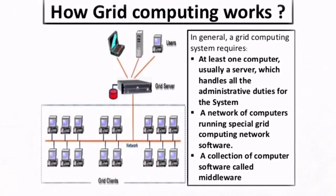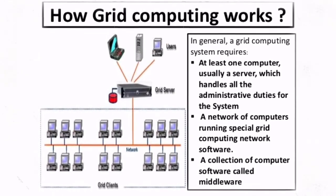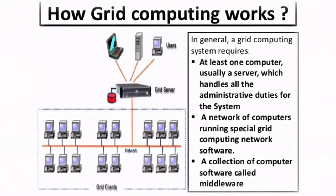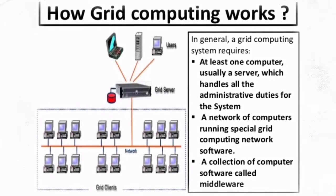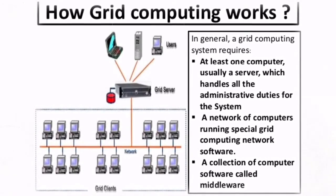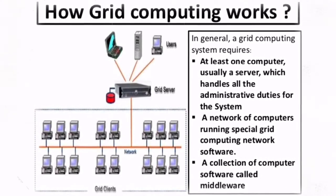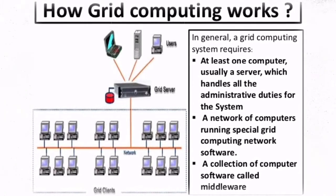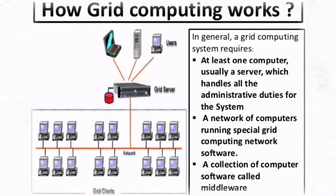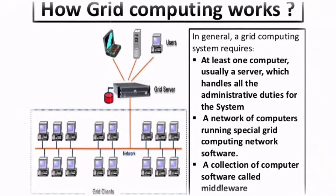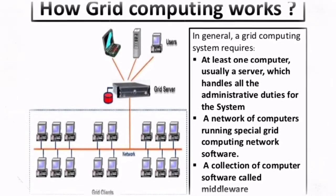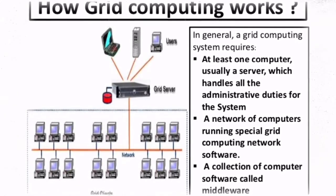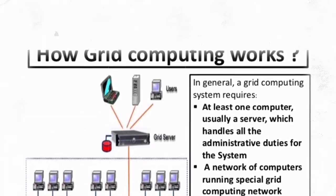How does a grid computing system work? In general, a grid computing system requires at least one computer, usually a server, which handles all the administrative duties for the system, a network of computers running special grid computing network software, and finally a collection of computer software called middleware.